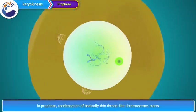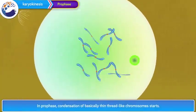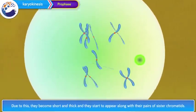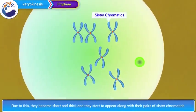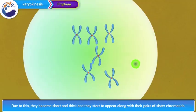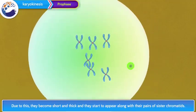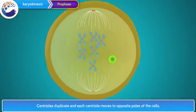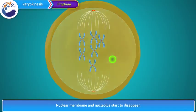In prophase, condensation of basically thin thread-like chromosomes starts. Due to this, they become short and thick and start to appear along with their pairs of sister chromatids. Centrioles duplicate and each centriole moves to opposite poles of the cell. Nuclear membrane and nucleolus start to disappear.